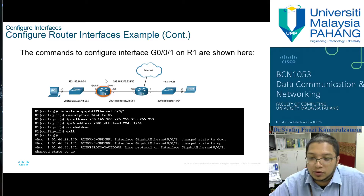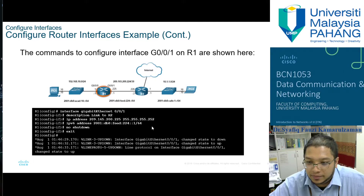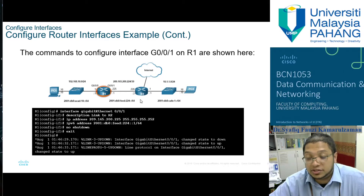Next we configure the right-side interface g0/0/1, which is the link to R2. This interface has its own different IP address and IPv6 address, with 'no shutdown'. You can see that you have two different IP addresses based on the connection itself.